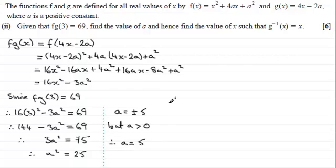So find the value of a, done that, a equals 5. And hence find the value of x such that the inverse function of g of x is equal to x. Well before I can work out the inverse function of g of x, I need to get g of x, and I can see it's 4x minus 2a but a is 5 so we can work off that.